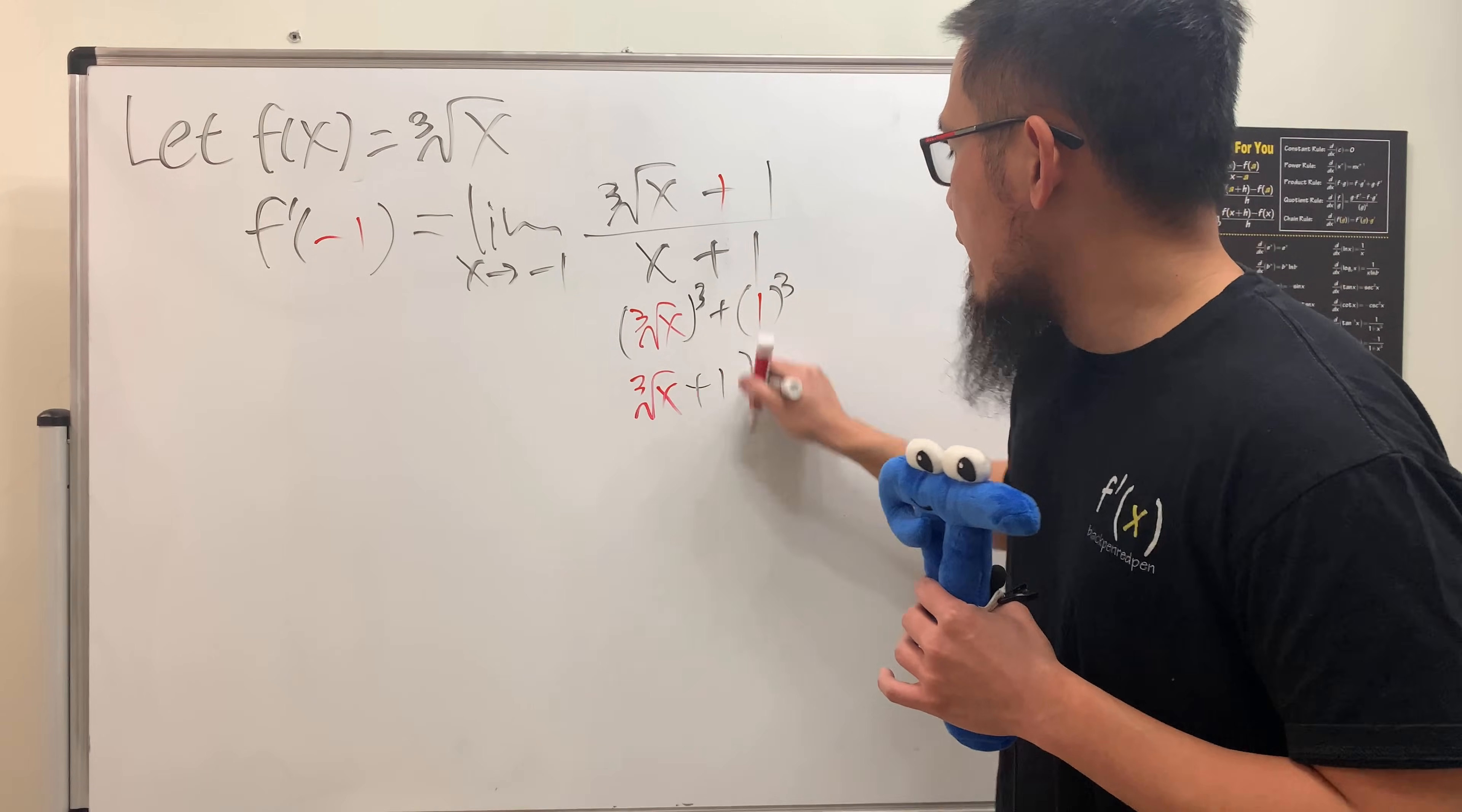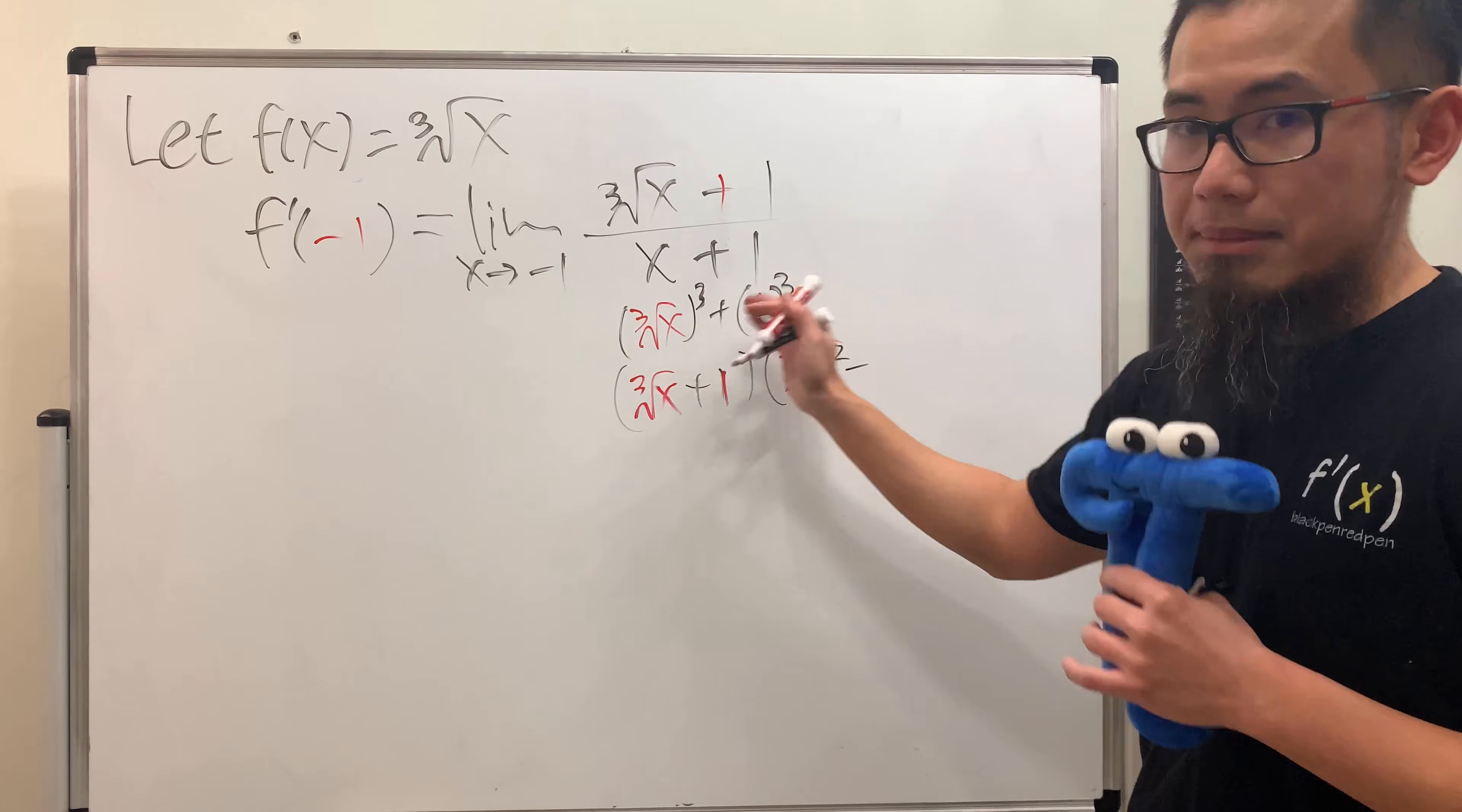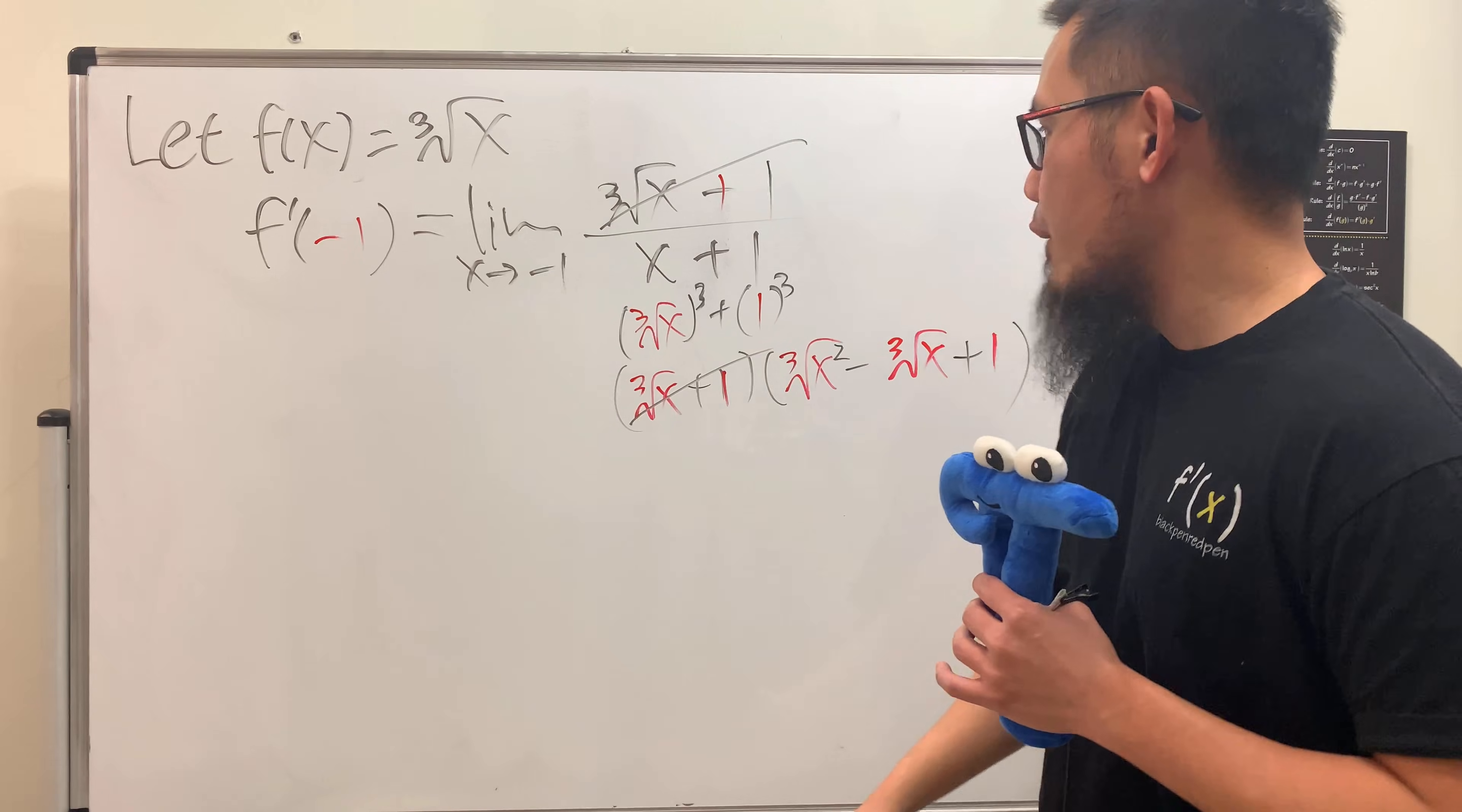cube root of x, and then plus 1, times, the other part is just this guy squared, which is the cube root of x, and then square that, and then minus this times that, which is going to be the cube root of x, and then we have plus 1 squared, which is just 1, and you can see this and that actually cancel very nicely, right? Very good.